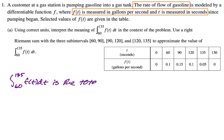So the integral from 60 to 135 of f(t) dt is going to be, we integrate a rate to get a total. So it's going to be the total amount of gas. Now we have to use context. So it's the total amount of gas.